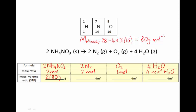At STP, 2 moles of nitrogen gas will have a volume of 2 × 22.4 dm³. 1 mole of oxygen will have a volume of 22.4 dm³, and 4 moles of water vapor will have a volume of 4 × 22.4 dm³. Now we have our reacting ratio in a format where everything is equivalent, and we can use this to help us answer questions.